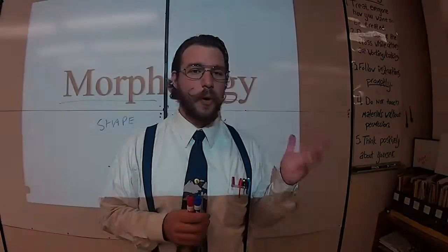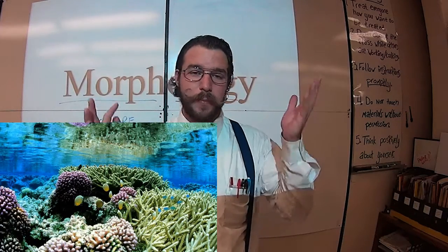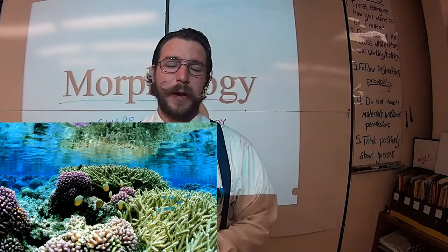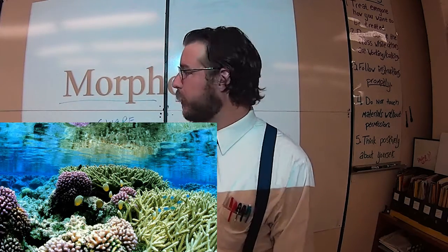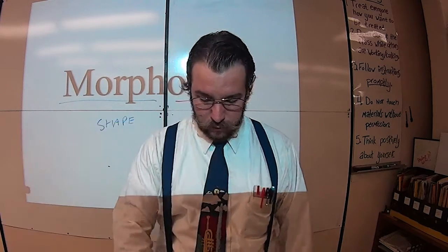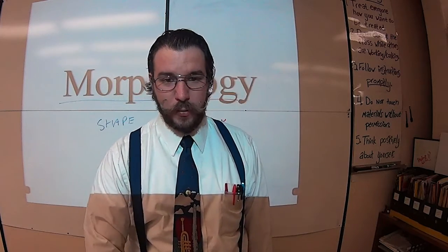For example, coral — that's a plant. No, it's not, but it looks like a plant. It's actually an animal, and for a long time it was classified as a plant because it just sits there and hangs out. So morphology has its limits. You also have another one called phylogenetics.